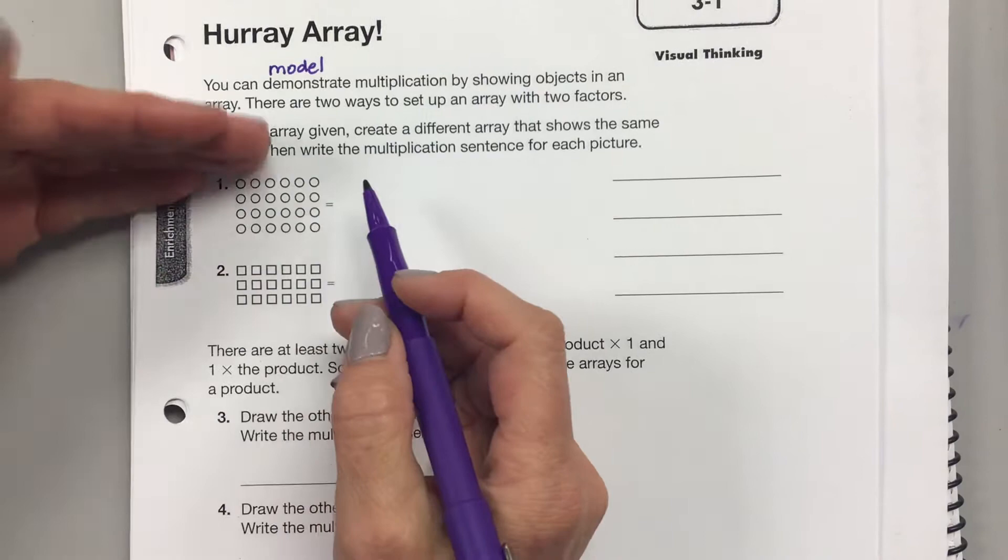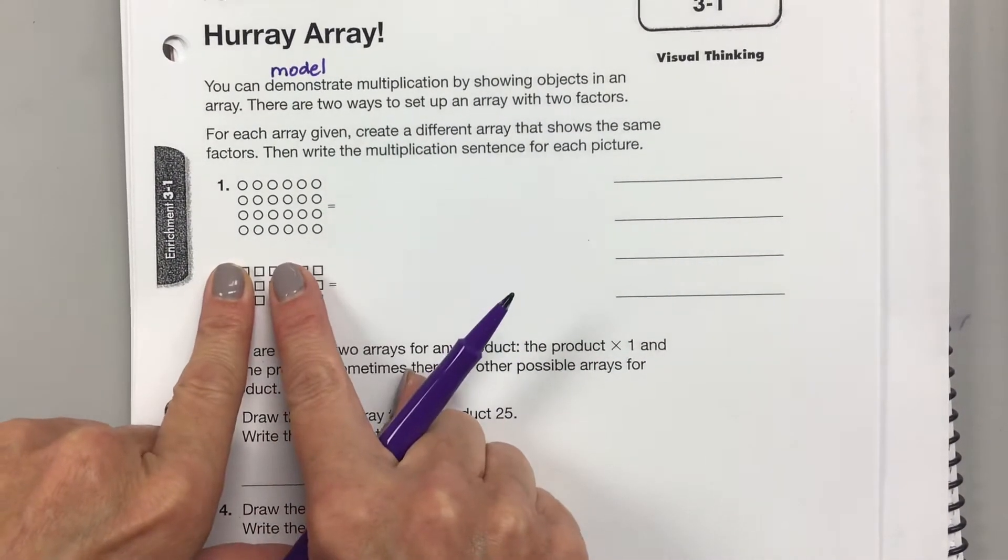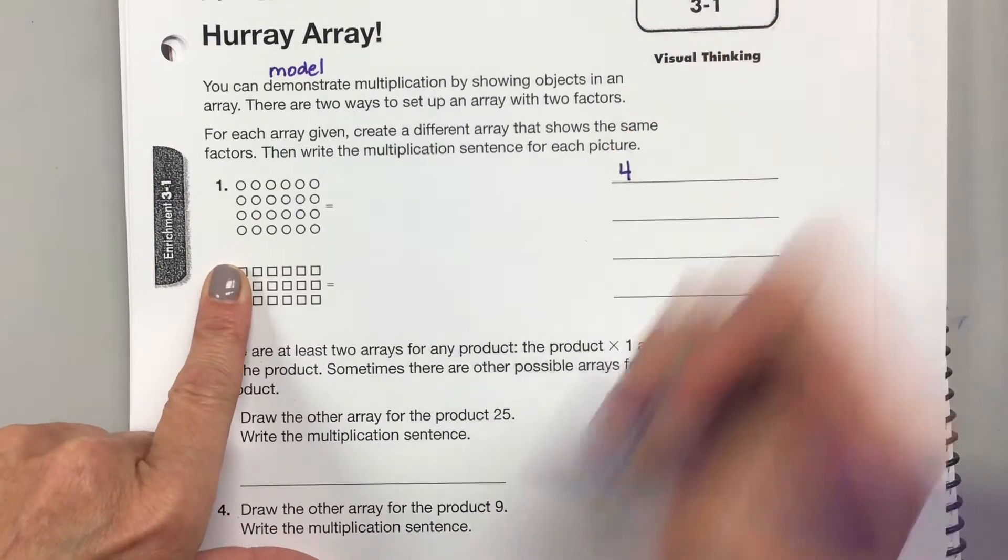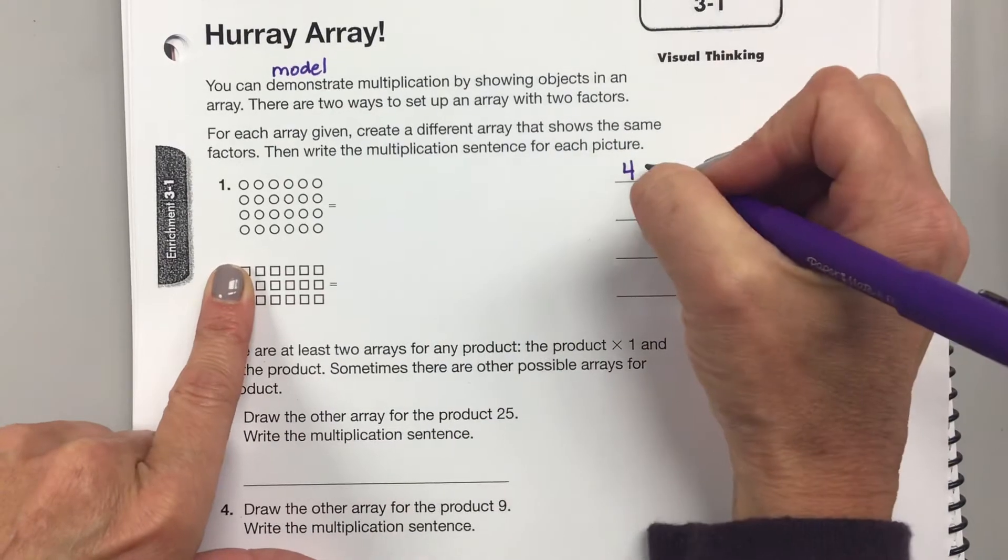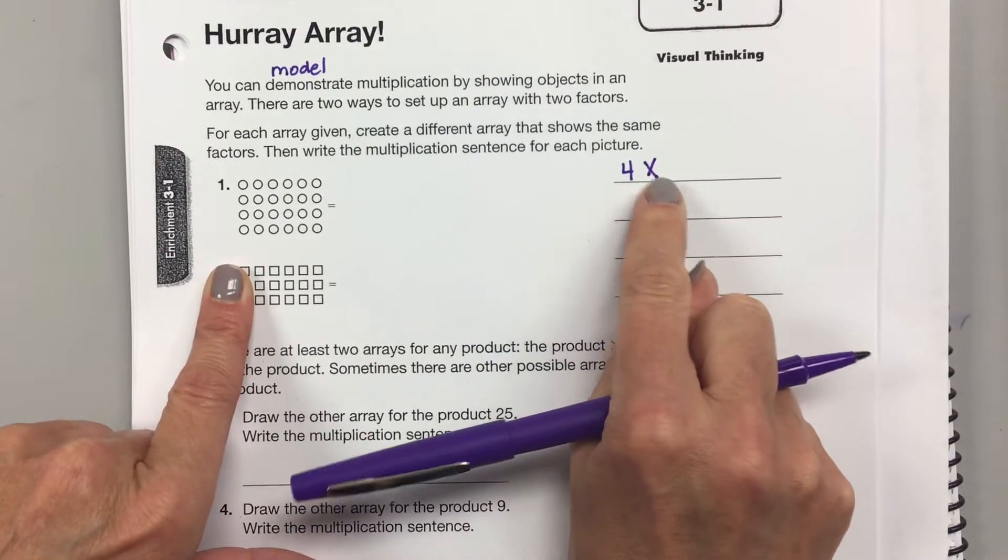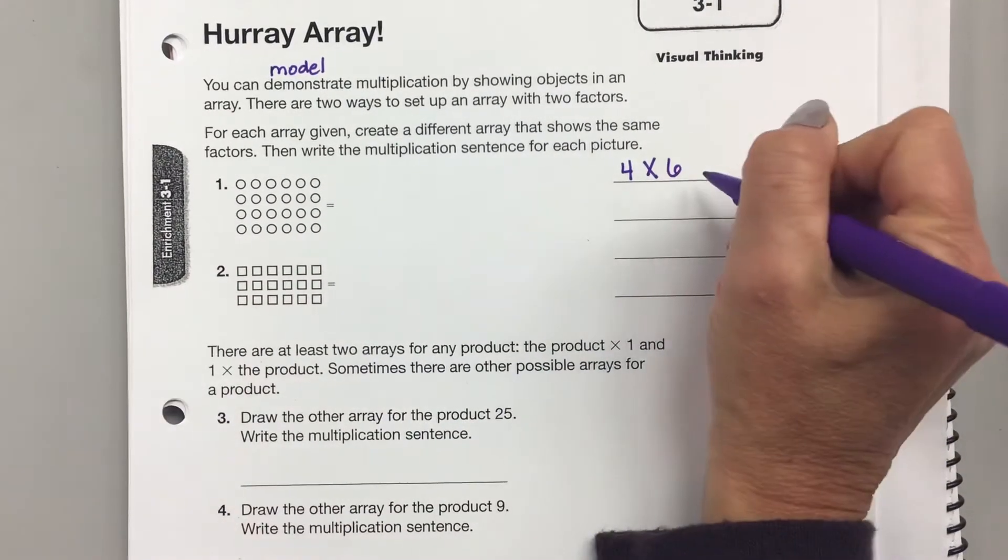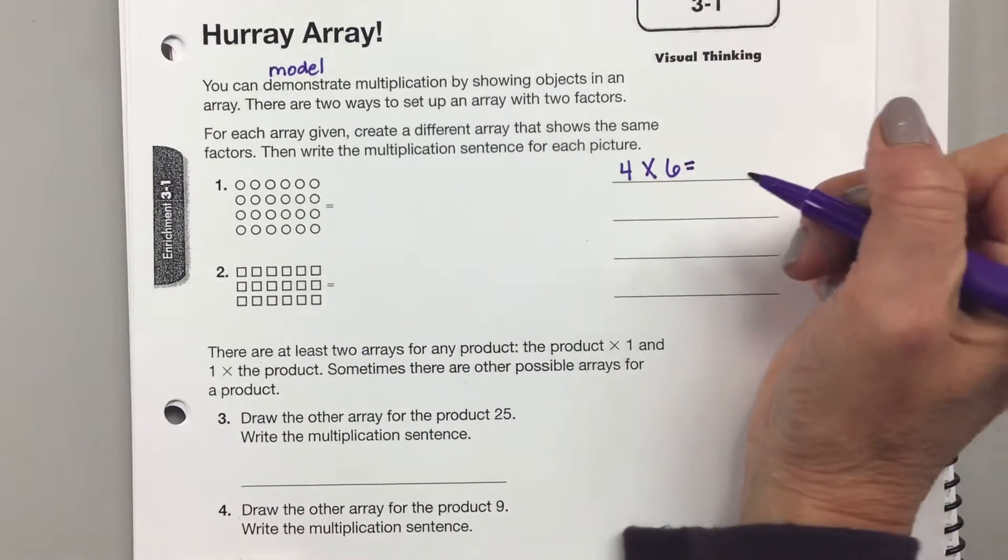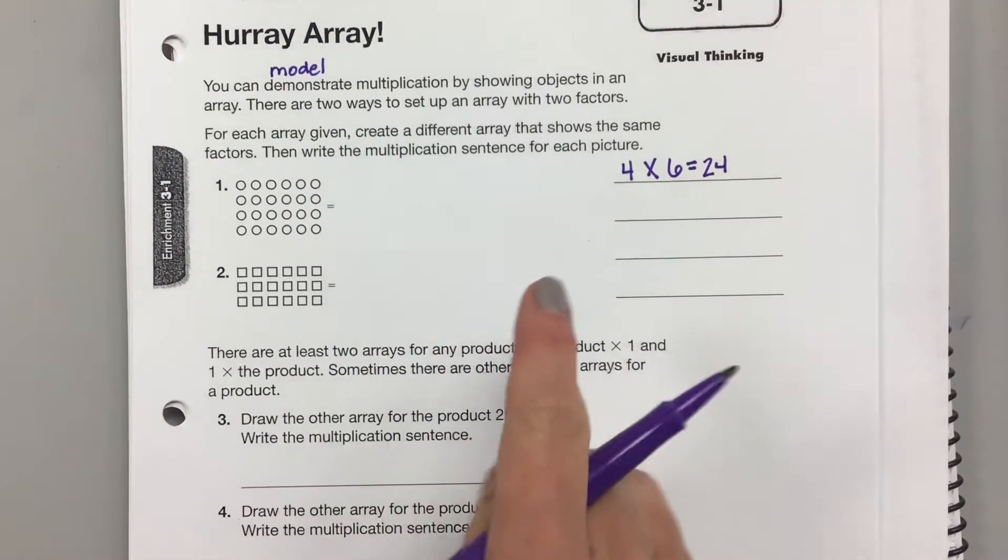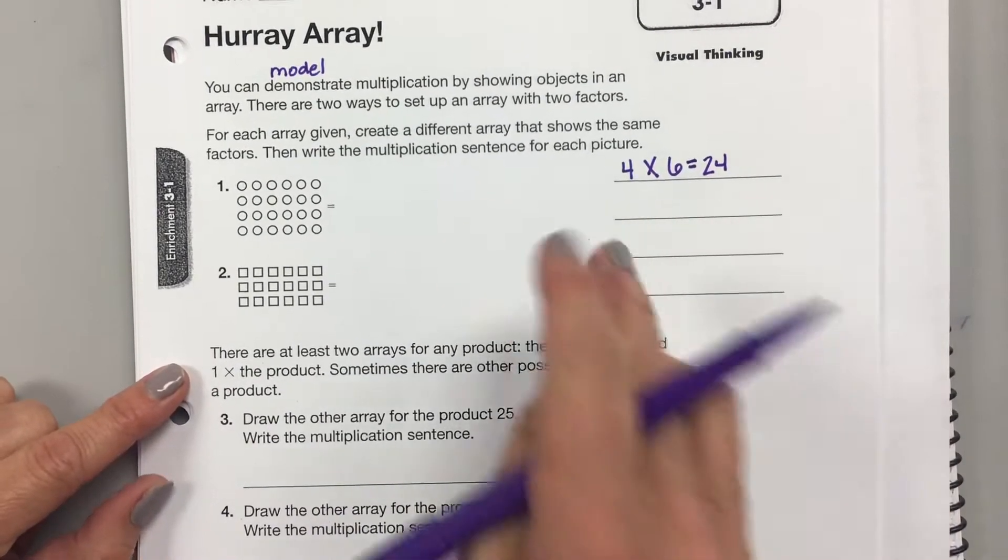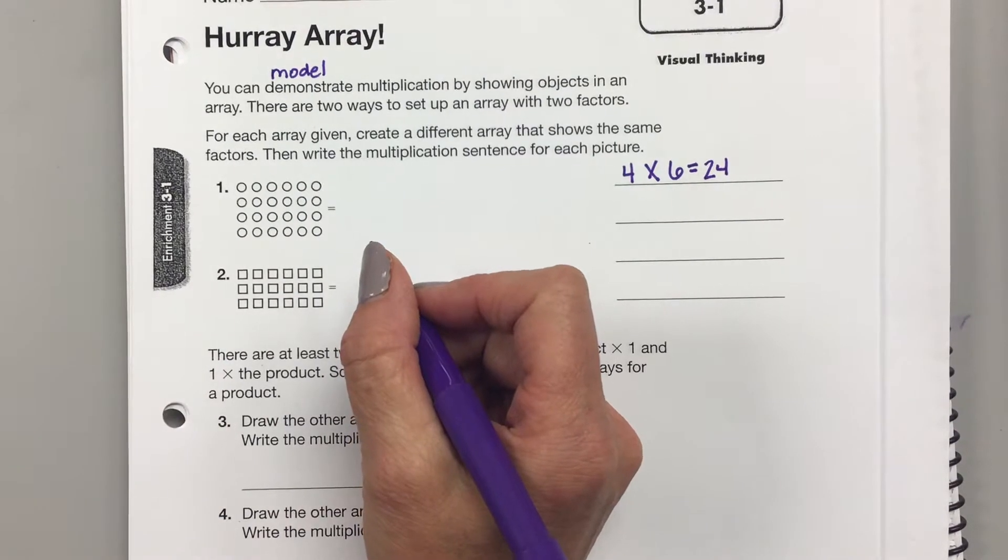So this array has how many rows? Four rows. Remember, our first factor tells how many rows. The x means rows of. Four rows of how many are in each row? Six. And then a multiplication sentence needs an equal sign and the product. So four times six is one more, four. Now I can do an array to show six times four. So how many rows would I need for six times four? Six.